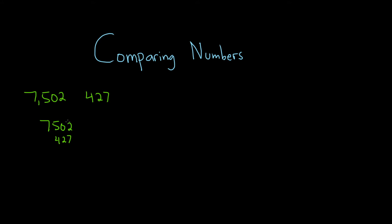And you could easily say that the number up top is bigger because it has more digits than this one. So this number up top is going to be bigger. So the way you write that in mathematics is you write down the 7,502 and you want to say it's greater than 427. So the symbol we use for greater than looks like this. So greater than 427.